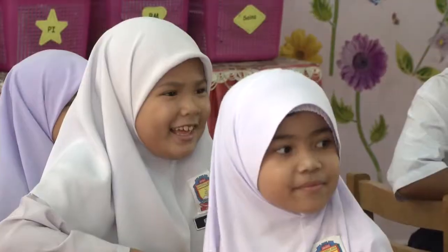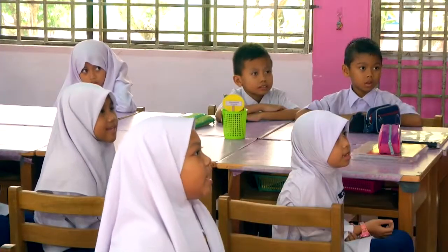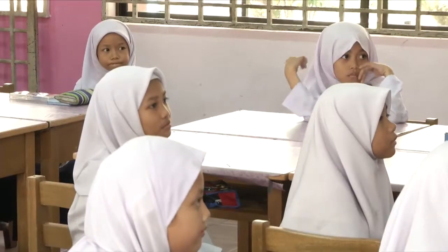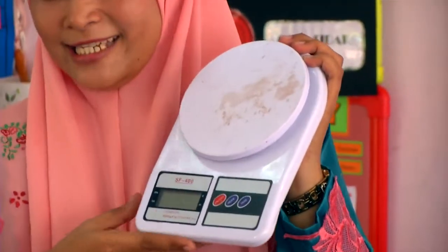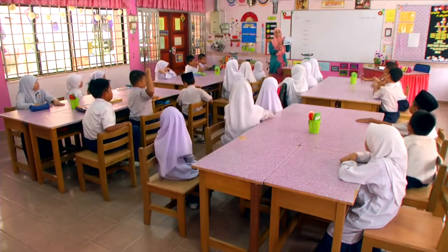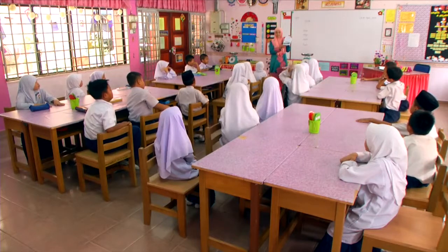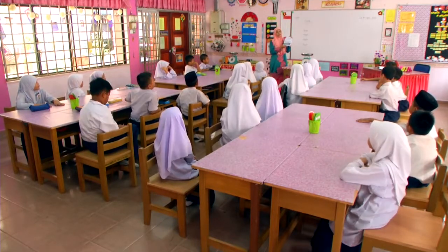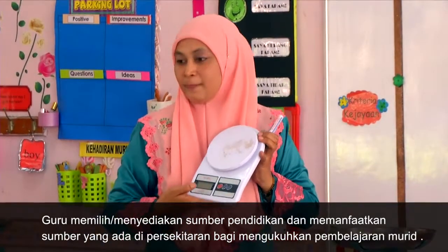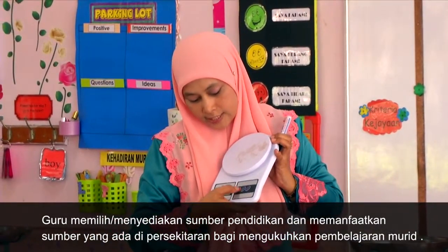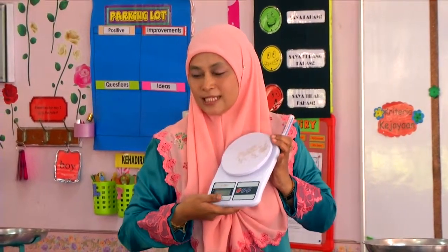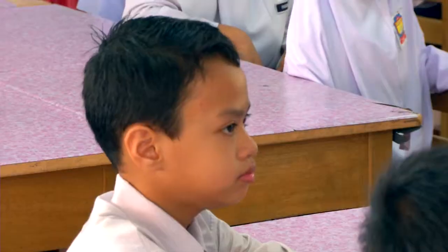Selain pada yang ni, cikgu Rosliza nak tunjuk lagi satu. Ini ialah salah satu contoh penimbang juga. Kita boleh gunakan alat ini untuk menimbang objek-objek juga. Tetapi yang ni kita panggil penimbang digital. Kalau cikgu Rosliza pasang, dia akan keluar nombor dekat sini. Kita boleh letak alatan tu di atas ni.